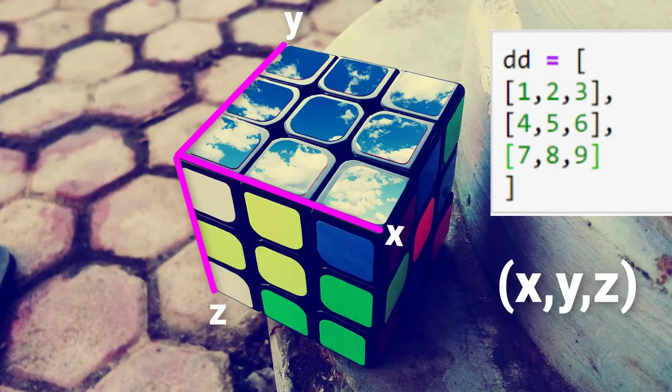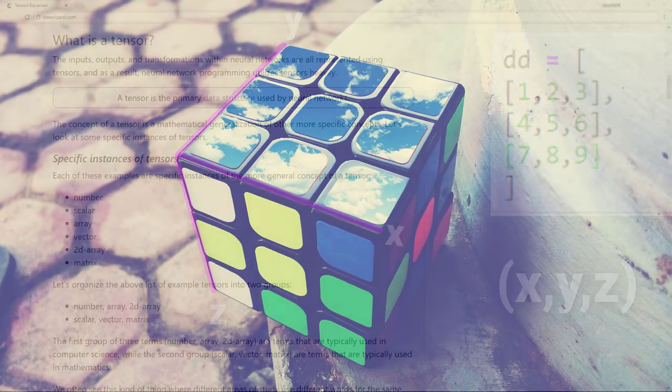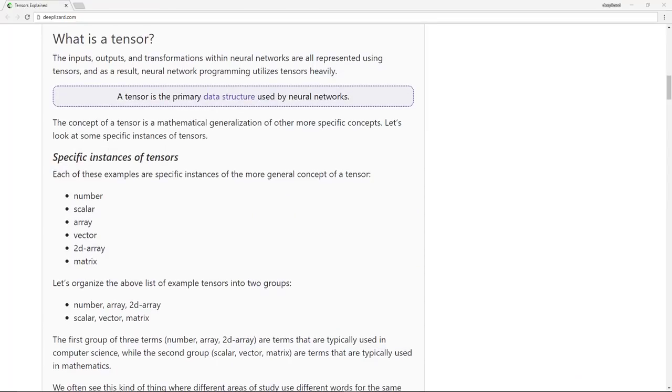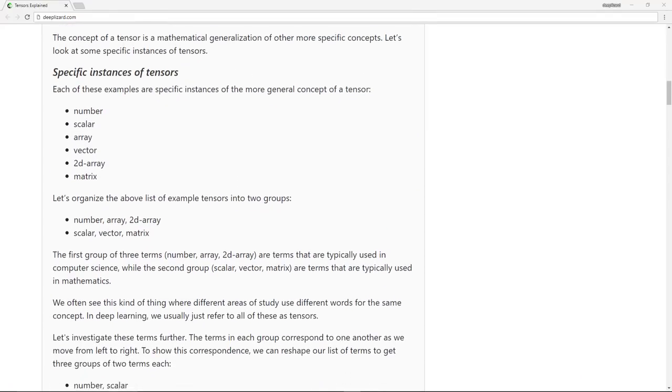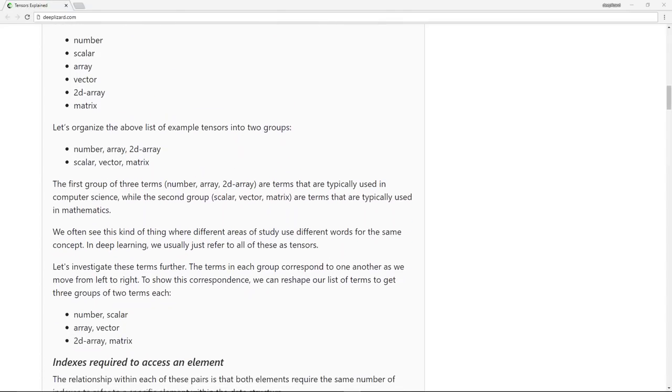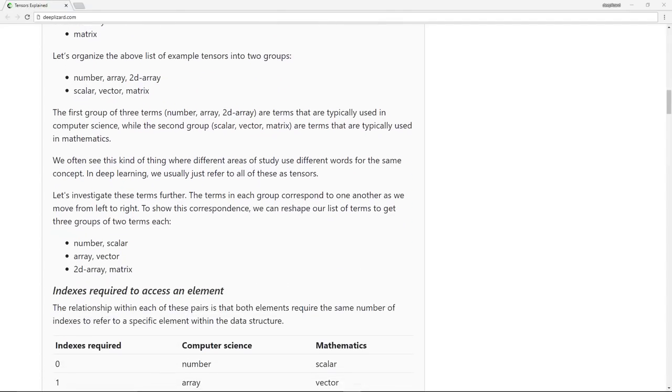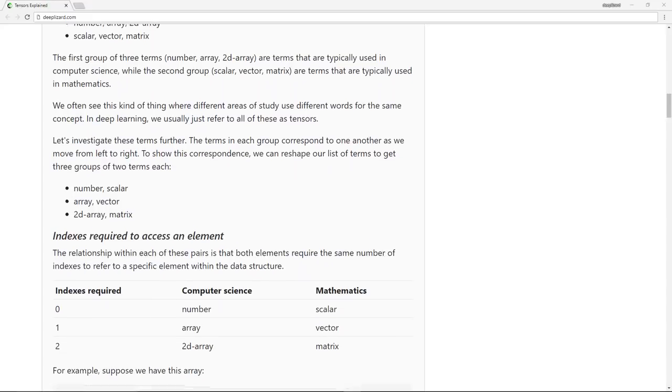In the next post, we will cover the concepts of rank, axes, and shape. These are the fundamental attributes of tensors that we use in deep learning. If reading's your thing, I highly recommend you check out the blog post for this video on deepblizzard.com. Also, check out the deep blizzard hive mind for exclusive perks and rewards. Thanks again for contributing to Collective Intelligence. I'll see you in the next one.